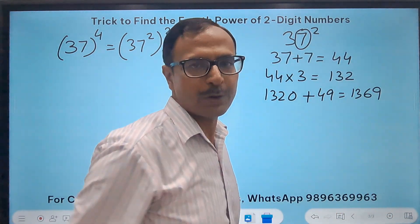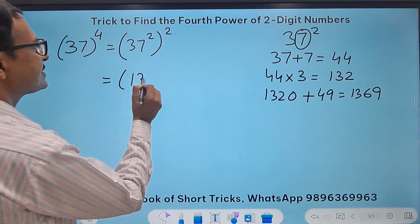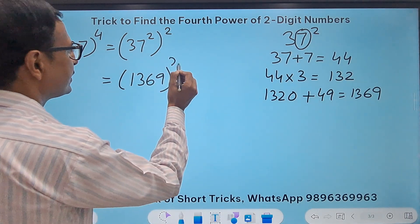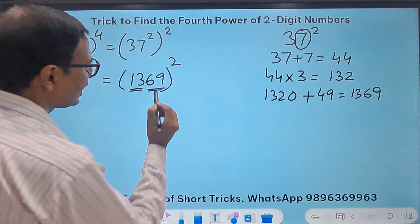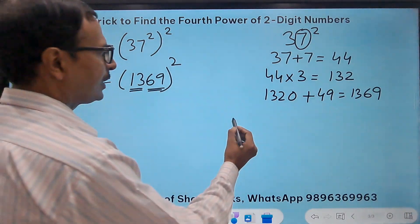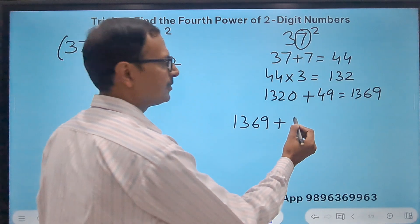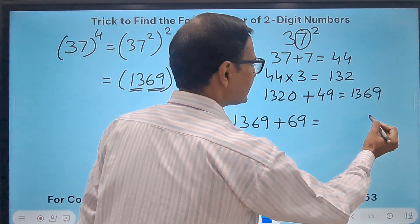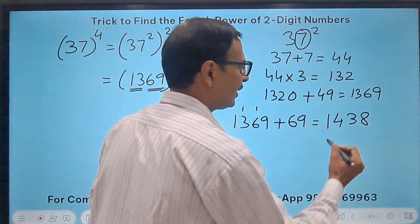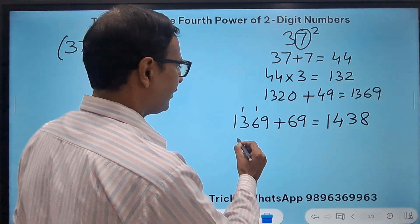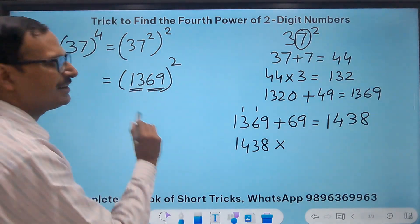So 37 plus the unit digit 7 is 44, 44 times the tens digit 3 is 132, and then 132 followed by a 0 plus 7 square, which is 49, gives me 1,369. See how quickly you can find the square of a two-digit number.